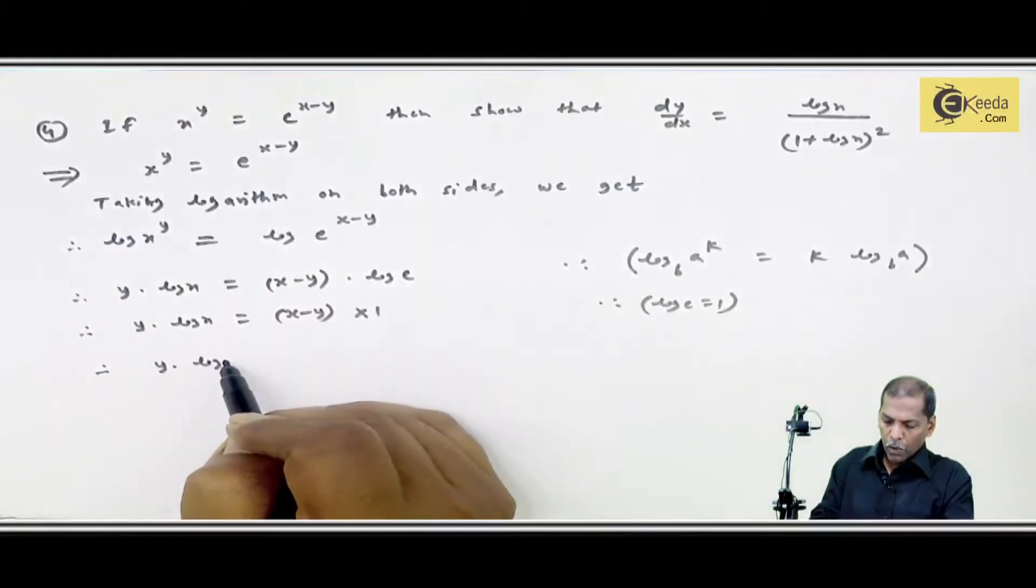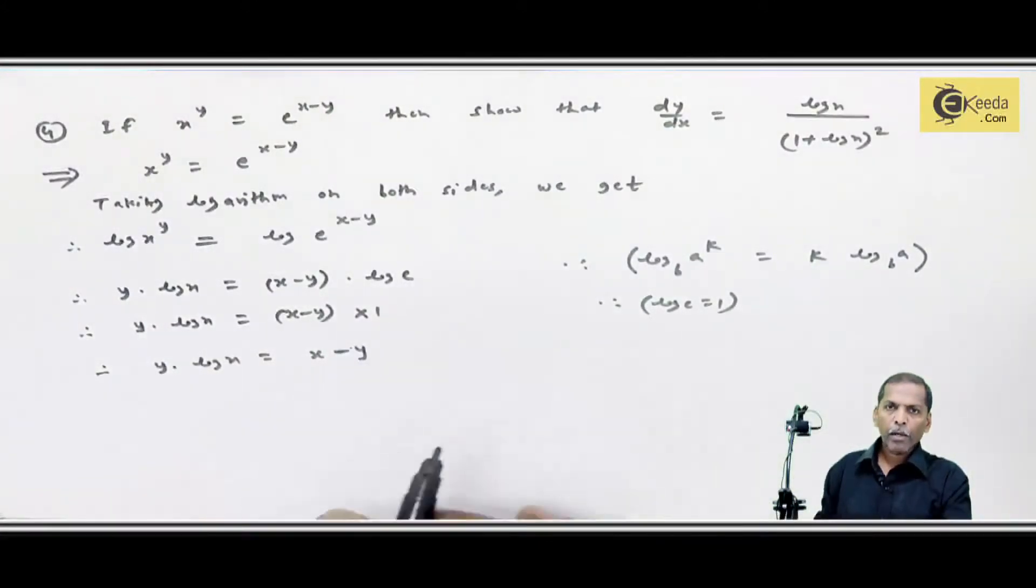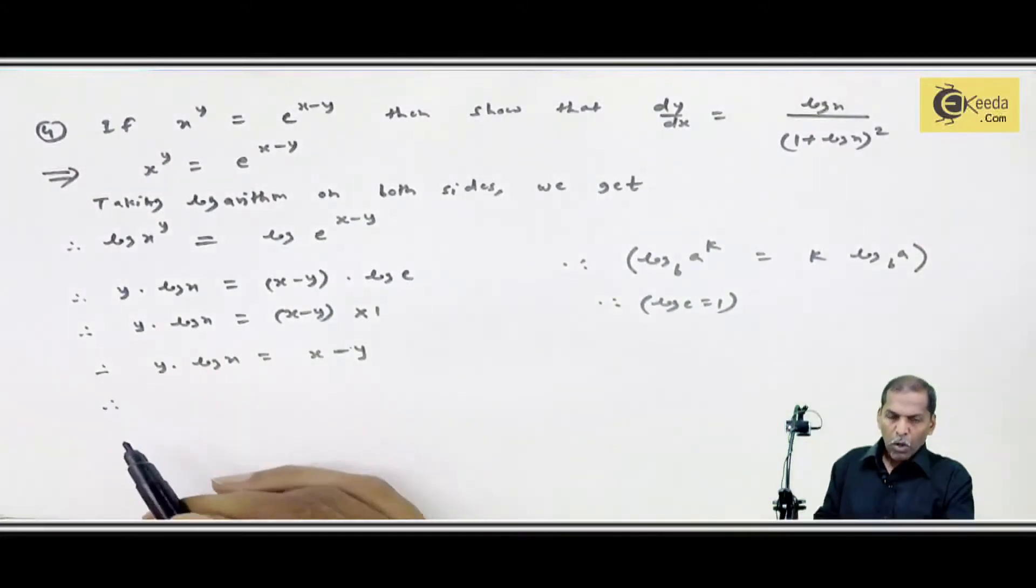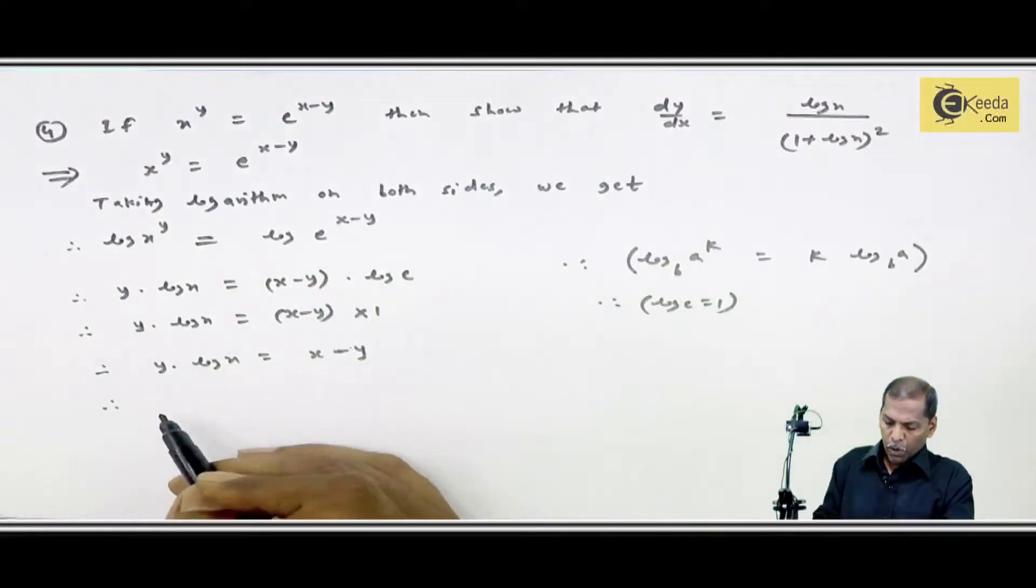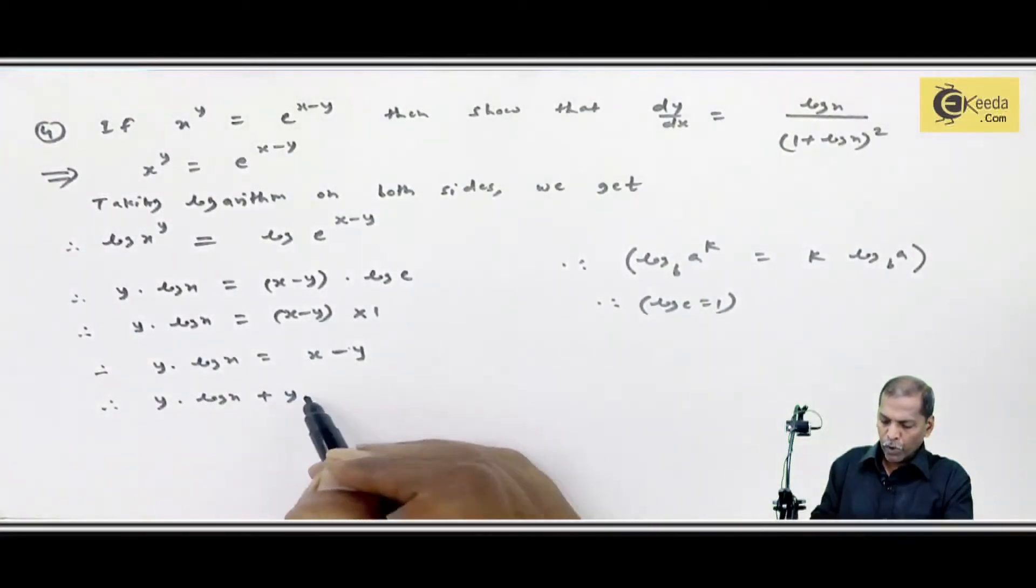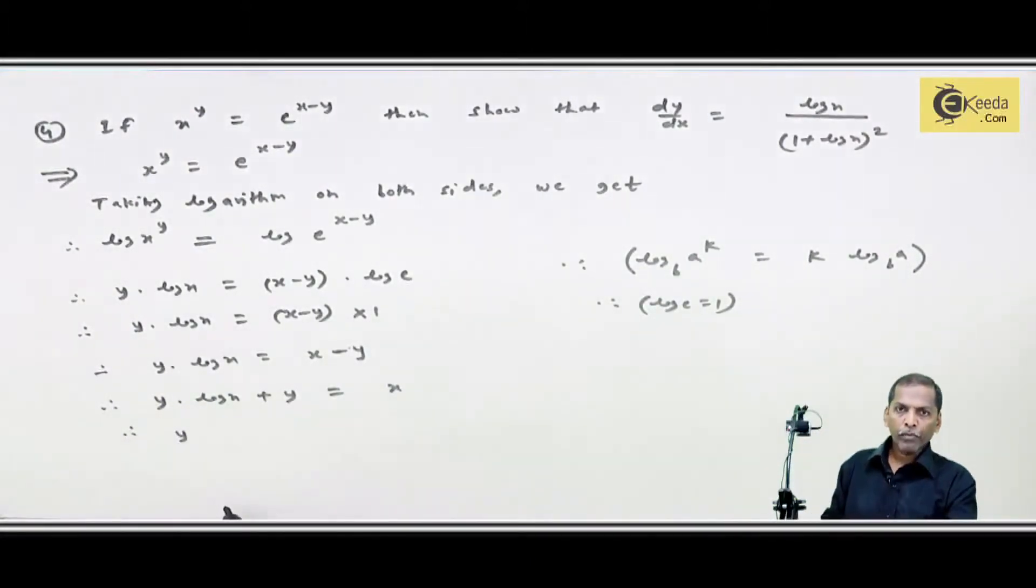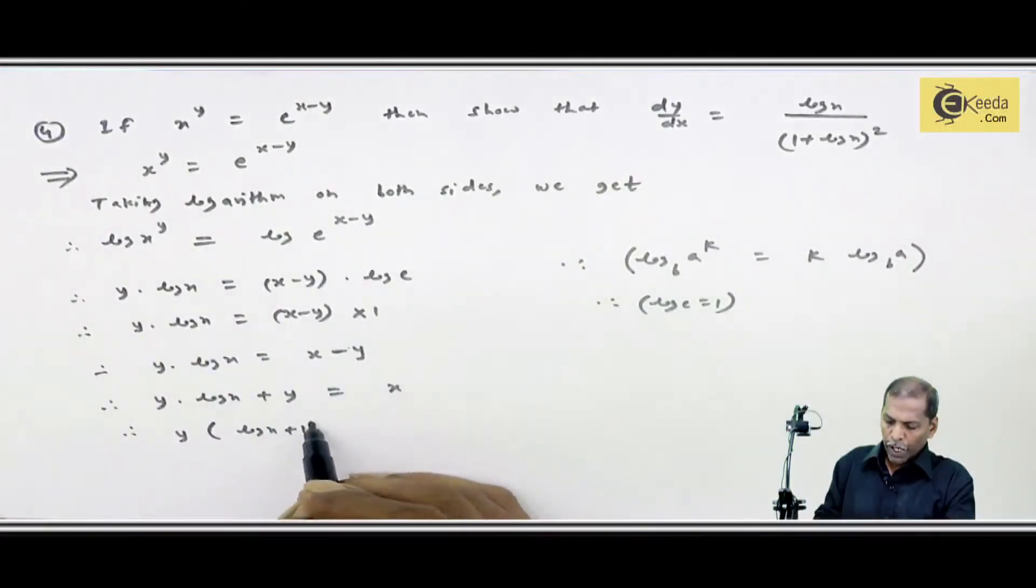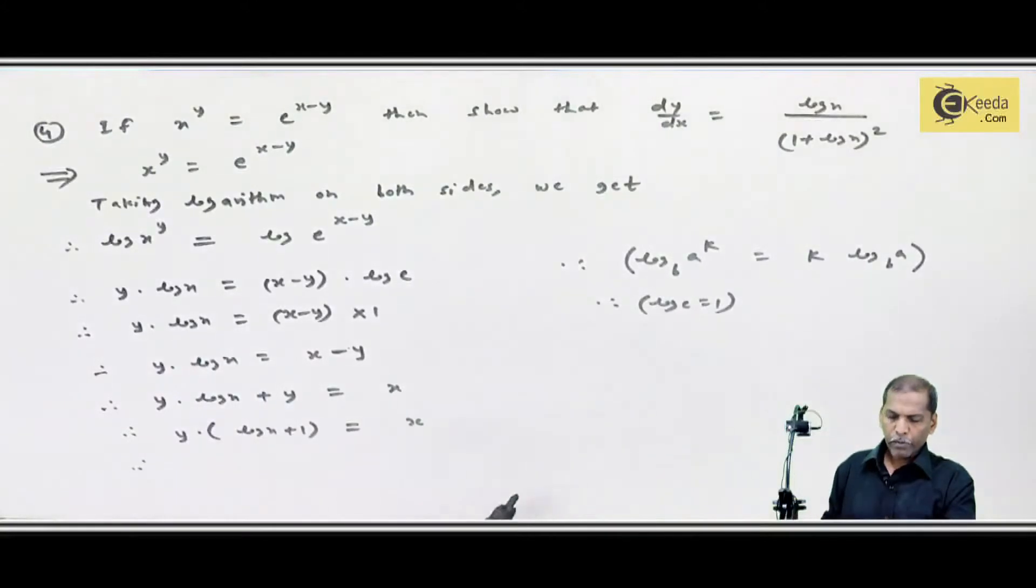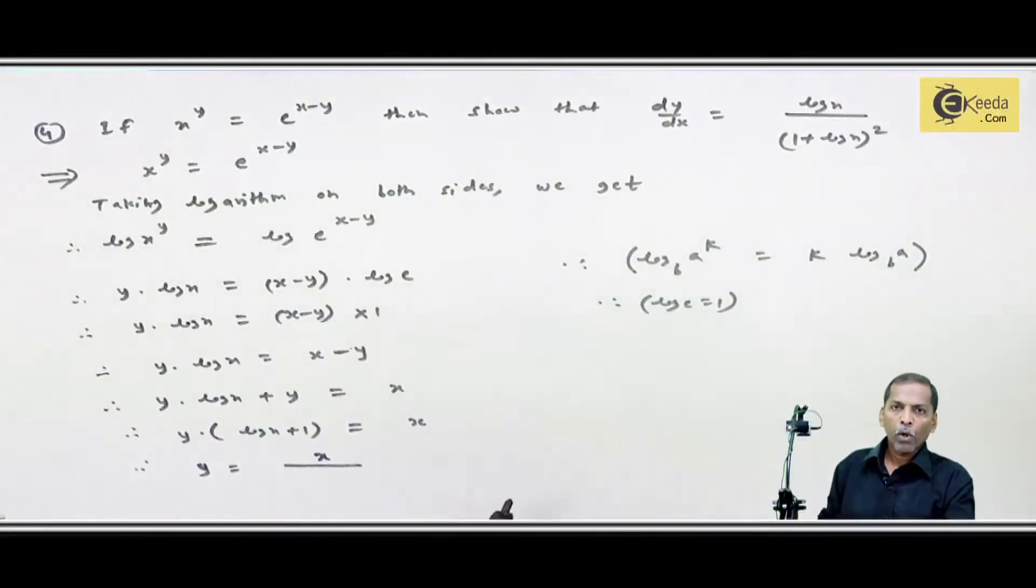Then y into log x is equal to, if we multiply 1 by 1, what will be x minus y. We collect y term left. First, y connected term is y into log x minus y. We have to shift, so y log x plus y equals x. Next step, we have to take y common. What should we do in bracket? Log x plus 1 is equal to x. Finally we get y equal to x upon log x plus 1.